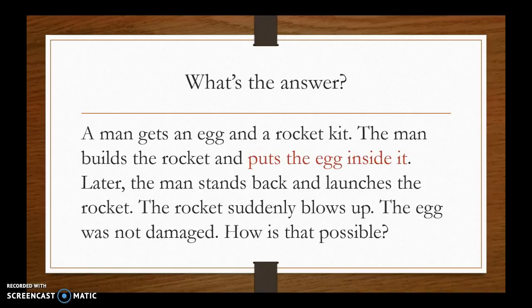Here's another one. A man has an egg and a rocket kit. He builds the rocket and puts the egg inside it. Later, the man stands back and launches the rocket. The rocket blows up but the egg was not damaged. How is that possible? The key word is 'later' — it indicates that something happened in between. He took the egg out before launching, which is why it wasn't damaged. Sometimes you have to read what's not there.